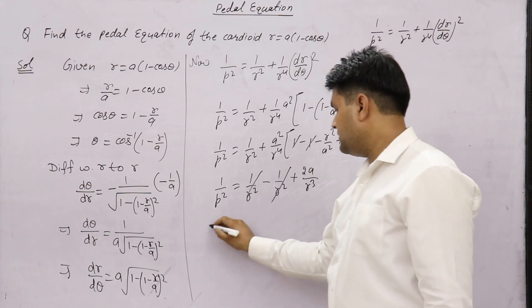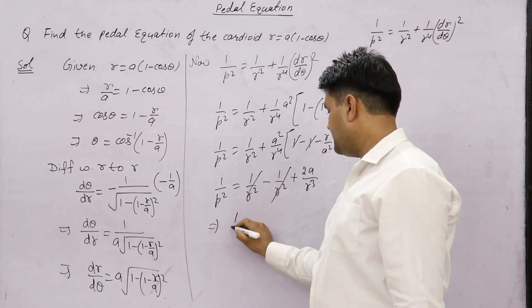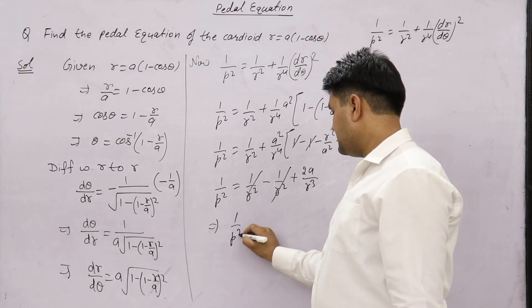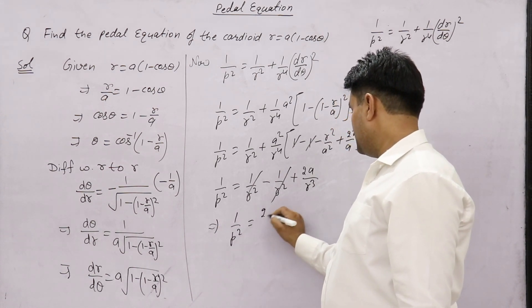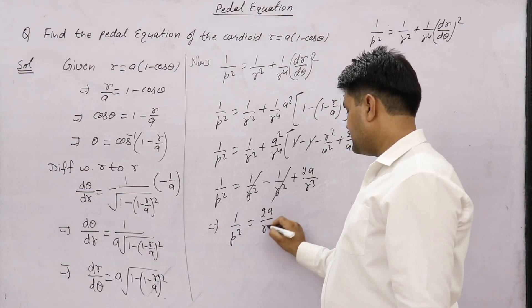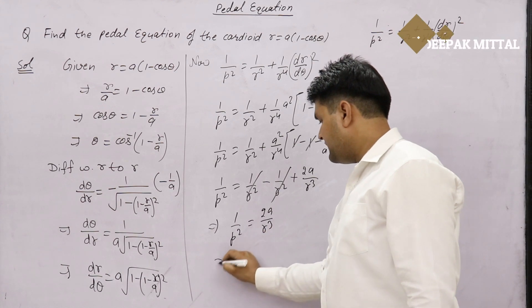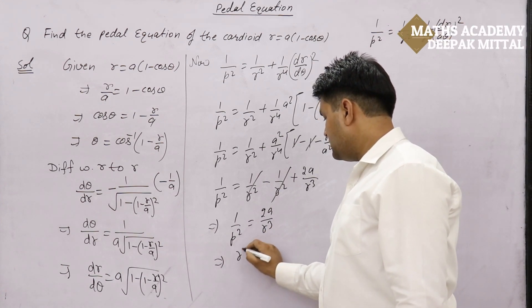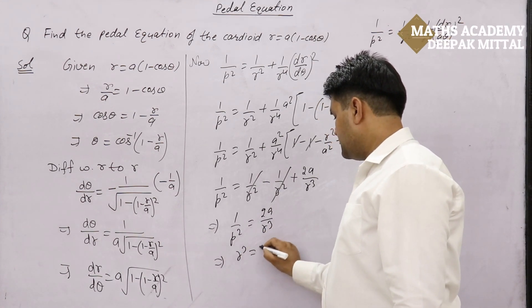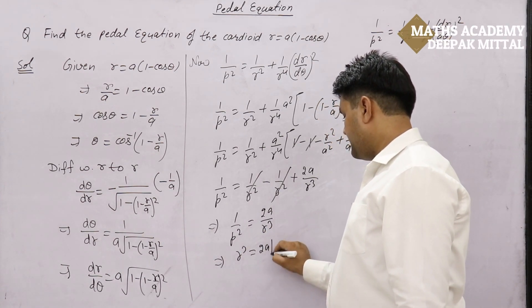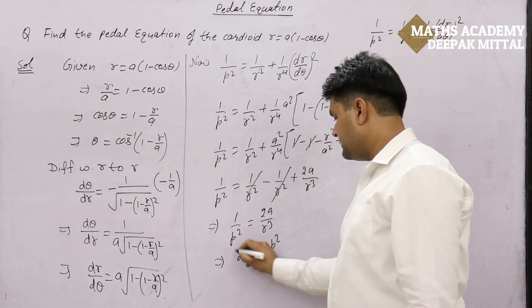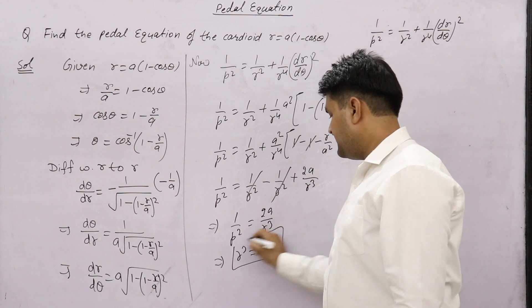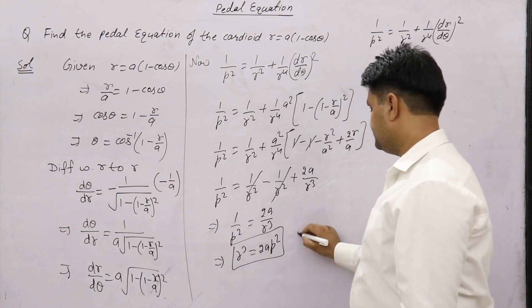After simplification, we get 1/p² = 2a/r³, which gives the final pedal equation: r³ = 2ap².